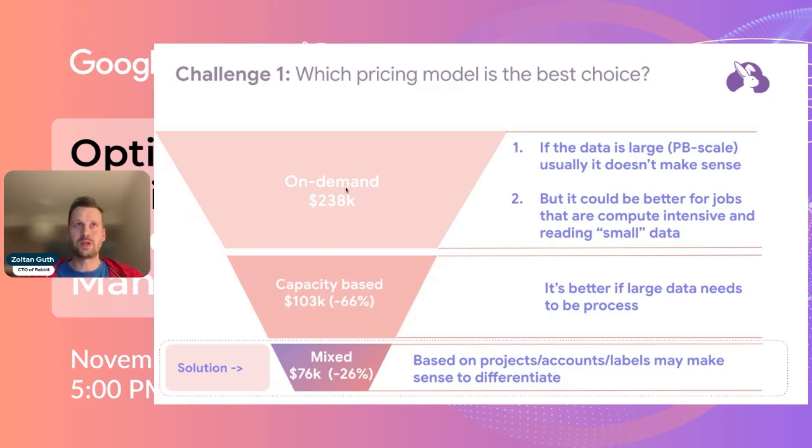We can see that on-demand doesn't make sense because they can shift to the capacity-based model and save a lot of money—more than half. It will be a little more than 100k if they put everything into a reservation, and usually this is a great idea for larger companies.